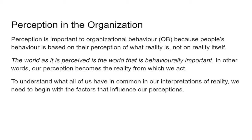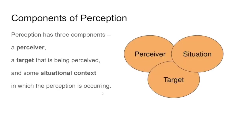Perception becomes reality for people when they perceive something a certain way and act accordingly. For example, anti-vaxxers perceive vaccines as no good and will do everything to support that belief. To understand what we have in common in our interpretations of reality, we need to begin with the factors that influence perception. What causes our perceptions to be somewhat different? We need to break it down into its components — this is the model building we use to explain, predict, and manage behavior.